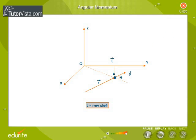The magnitude of angular momentum is given by the equation l is equal to r m v sin theta, where theta is the angle between vector r and vector p.